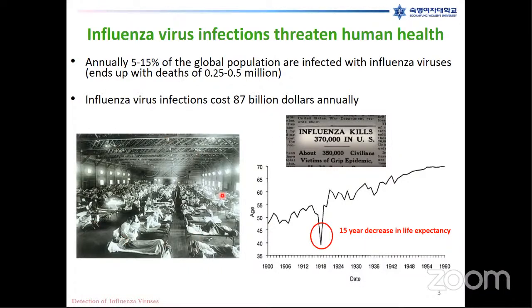Here is a picture showing many patients infected by influenza viruses. In that year, the life expectancy of the United States was suddenly decreased by 15 years. During this time period, because of medical improvement, the life expectancy of the United States was gradually increasing. But just by this single event of influenza virus infection, the life expectancy of the United States sharply decreased by 15 years.